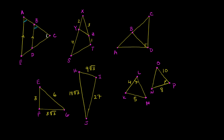So we can write triangle ACE is similar to triangle — and we want to get the letters in the right order. Where the blue angle is here, the blue angle there is vertex B. Then we go to the white angle, C. And then we go to the unlabeled angle right over there — BCD. So we did that first one.